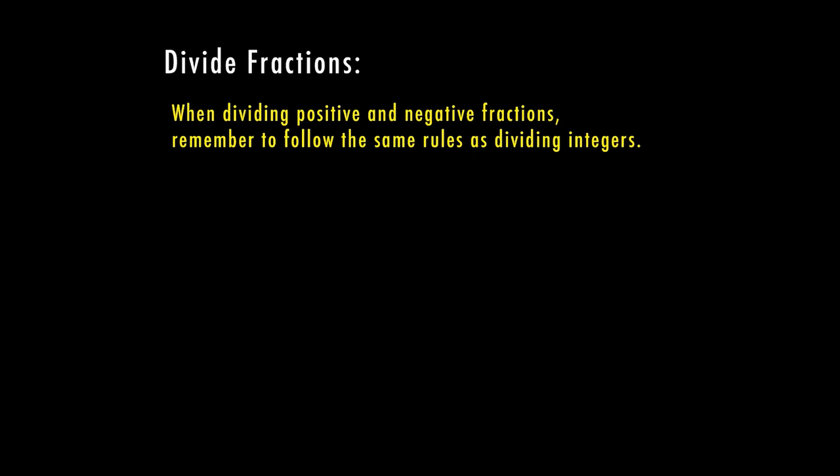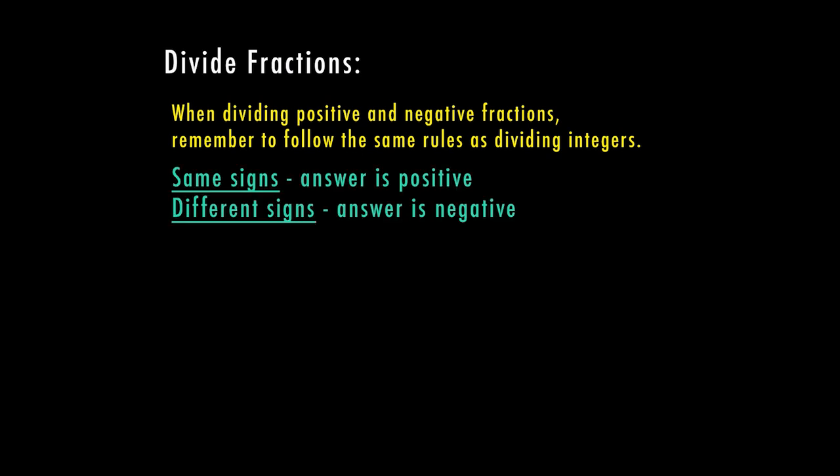When we're dividing positive and negative fractions, we need to remember to follow the same rules as dividing integers. So if they're the same sign, my answer is positive. If I have a negative divided by a negative, I'm going to have a positive answer. If they're both positive, my answer is going to stay positive. And then if one is negative and one number is positive, we're going to end up with a negative answer. Doesn't matter if it's the larger number or the smaller number that's negative. If one's negative and one's positive, we have a negative answer.